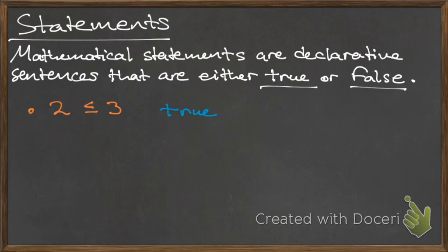For example, two is less than or equal to three is a declarative sentence that is true while negative five is greater than zero is false. Similarly, one is not equal to four is a true mathematical statement while zero is greater than two is a false mathematical statement.